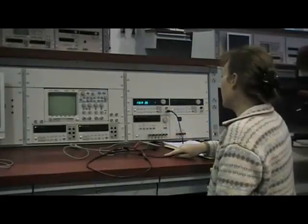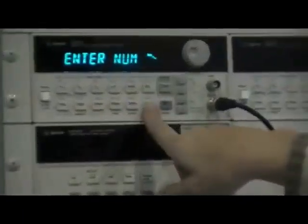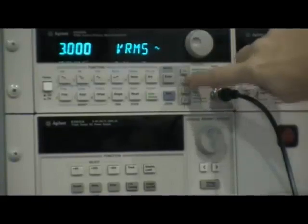The purpose of this tutorial is to understand the function generator display. To turn on the function generator, set the amplitude to 3 volts RMS.